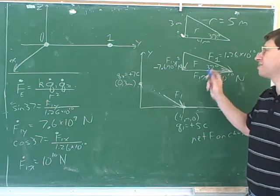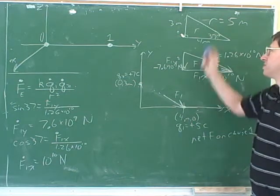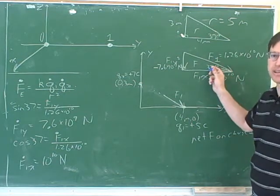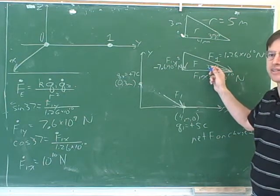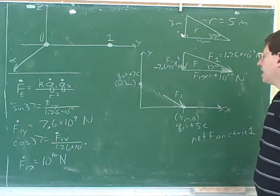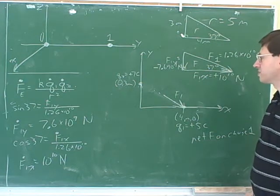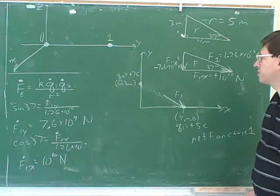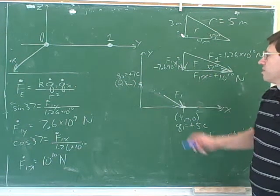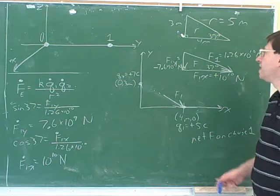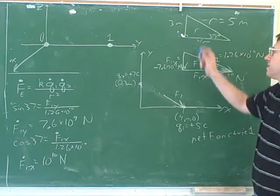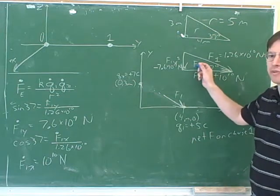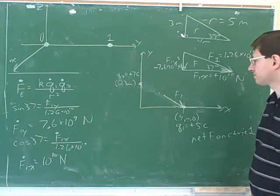If you had wanted to find this angle and not break it into components, you would still need these two triangles — the distance triangle and the force triangle. So the key note is: if you're working with Coulomb's Law in more than one dimension, you need both a distance triangle and a force triangle.